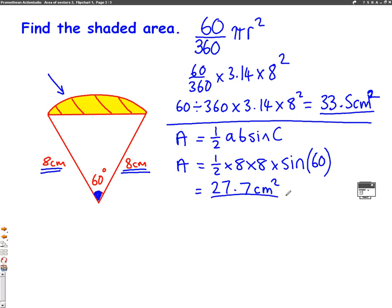All we need to do now is we need to take our whole sector, which is 33.5, and take away the triangle inside it, which is 27.7. And when you do this, you'll get the answer of 5.8 centimeters squared.